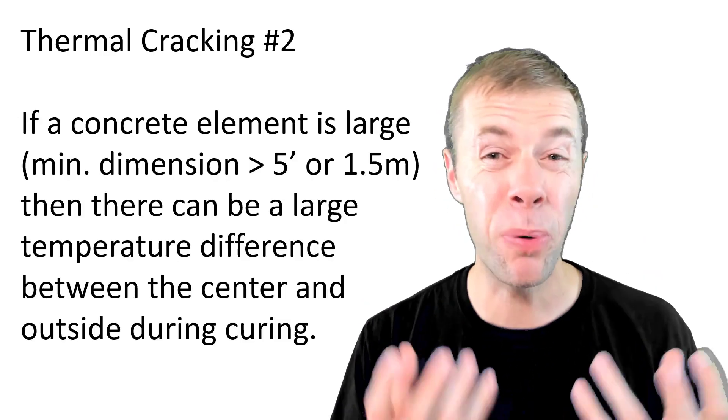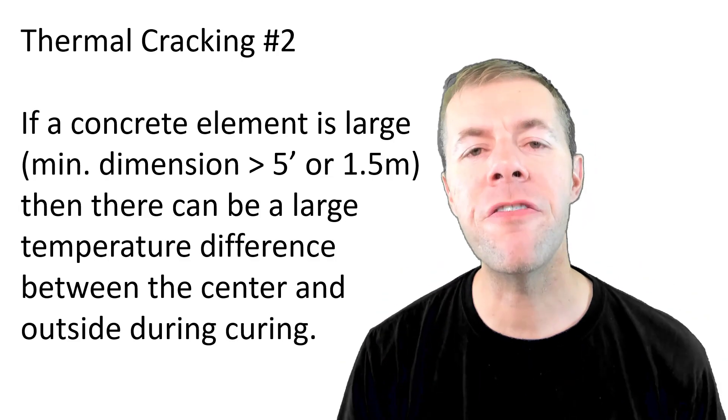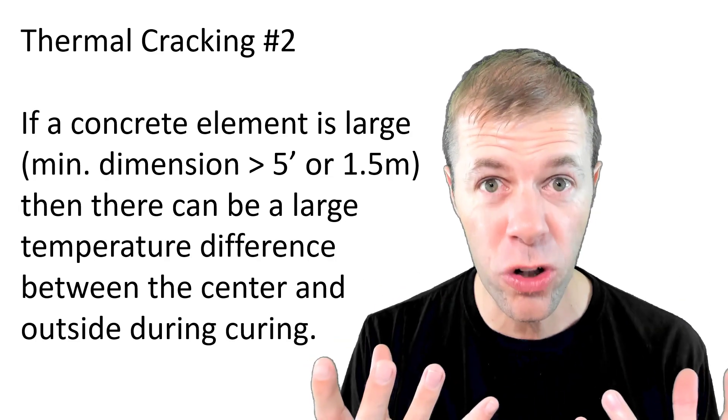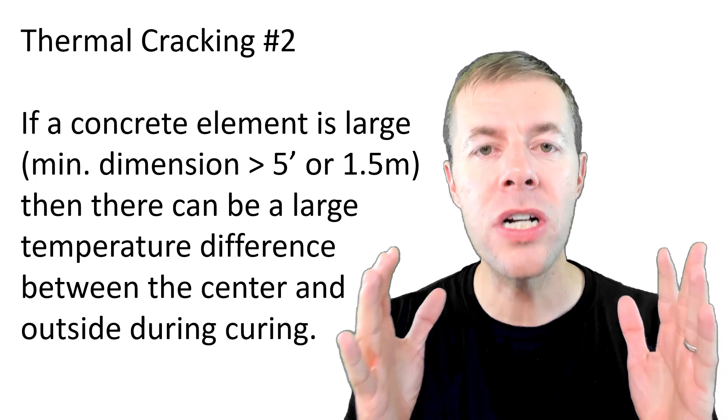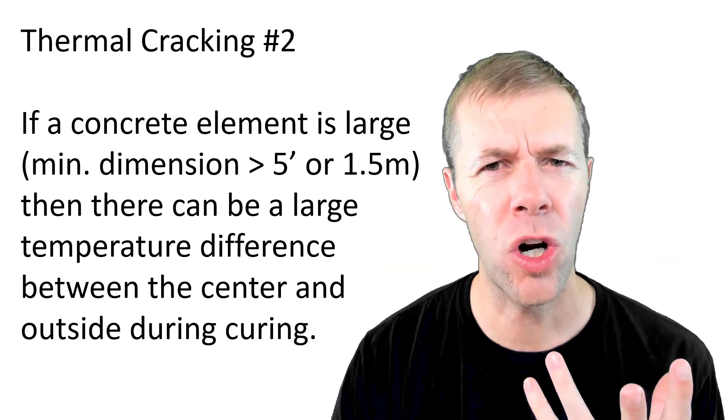Let's talk about thermal cracking number two. If you have a concrete element that's pretty large, what's large? If the minimum dimension is greater than about five feet or about one and a half meters, then when you cast or make the concrete, you can actually have a large difference in temperature at the core versus the outside during curing.